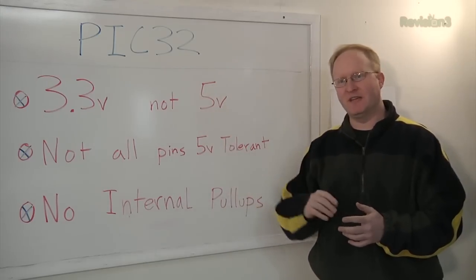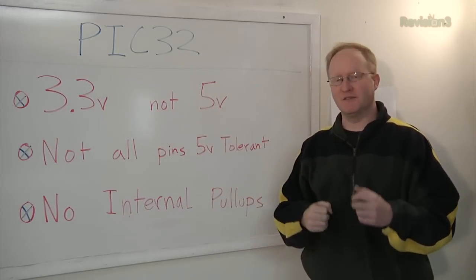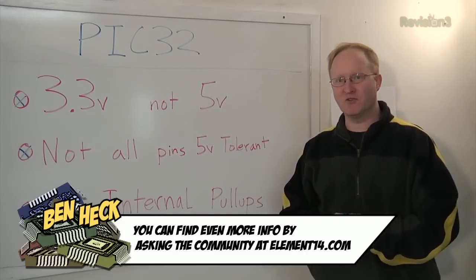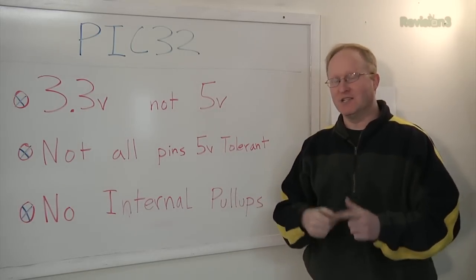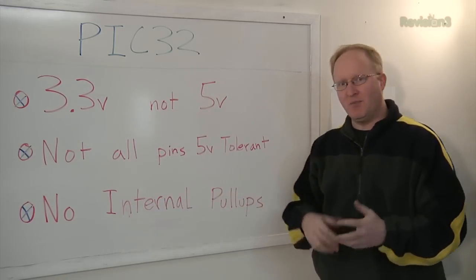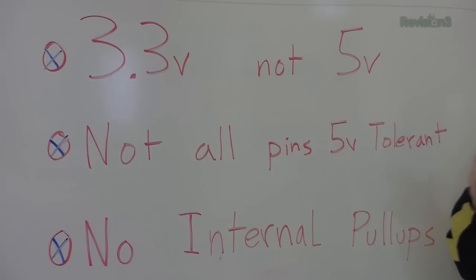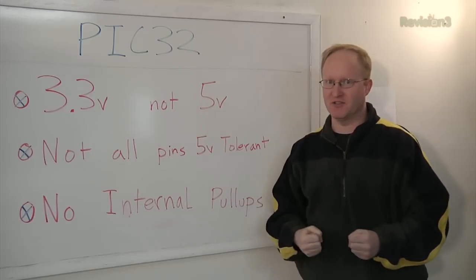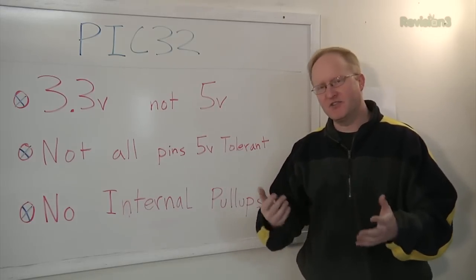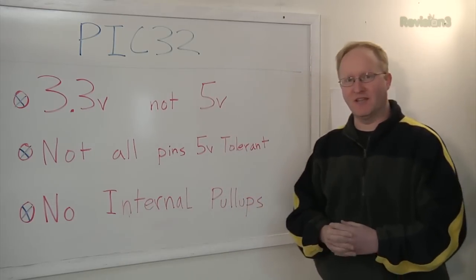There are some differences between the PIC32 and the AVR that we should go over, differences that could cause problems if you're not aware of them. First of all, it's 3.3 volt instead of 5 volt. That's the voltage it runs off of. Also, the voltage that are on its I.O. pins. Not all of its pins are 5 volt tolerant. 5 volt tolerance means if you have a 3.3 volt microcontroller, you can still have a 5 volt input digital I.O. into the pins and it'll be fine. Some of the pins on the PIC32 are tolerant, some aren't, so it's just best to assume that they all aren't. Also, there are no internal pull-ups. The AVRs can enable internal pull-ups where it does that on the chip. The PIC32 does not have internal pull-ups, therefore you always need to use physical external resistors to pull up and pull down. These are all voltage-related things that are important to keep in mind.